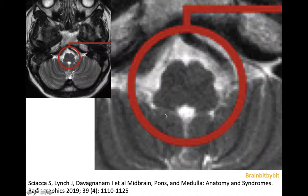Below the pons you're at the level of the medulla — again no contact with the cerebellum. Anteriorly in the medulla there are the medullary pyramids where the corticospinal tracts cross, and just behind that is the inferior olivary nucleus.